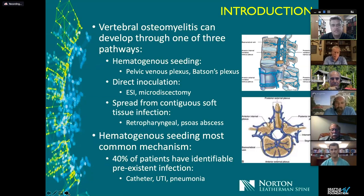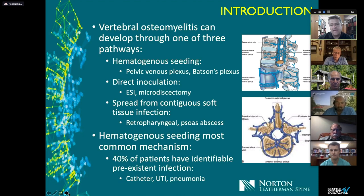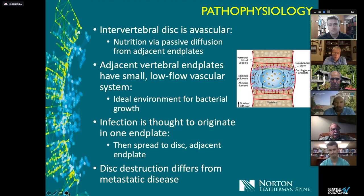Osteomyelitis can develop through one of three pathways: hematogenous seeding, direct inoculation from say an epidural or microdiscectomy, or spread from contiguous soft tissues such as a retropharyngeal or psoas abscess. Hematogenous seeding is the most common mechanism. About half the time you can identify a septic event two to four months prior that probably led to seeding of the spine — patients often report urosepsis or pneumonia. The intervertebral disc is avascular, receiving nutrition by passive diffusion from adjacent end plates. Infections typically start in the small, low-flow arterioles supplying the vascular end plates, then spread through the disc into the adjacent end plate.